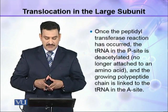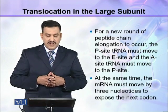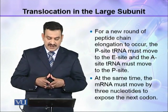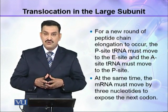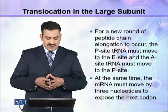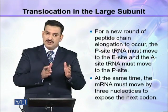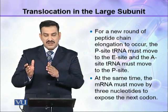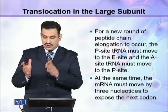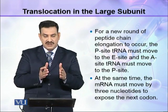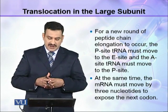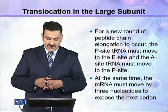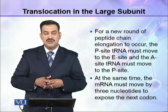The growing polypeptide chain is linked to the tRNA in the A site. For a new round of peptide chain elongation to occur, the P site tRNA must move to the E site, and the A site tRNA must move to the P site. At the same time, the mRNA must move by three nucleotides to expose the new codon.